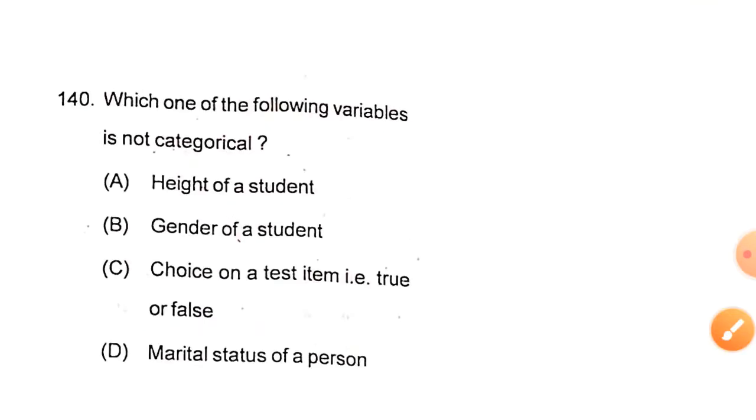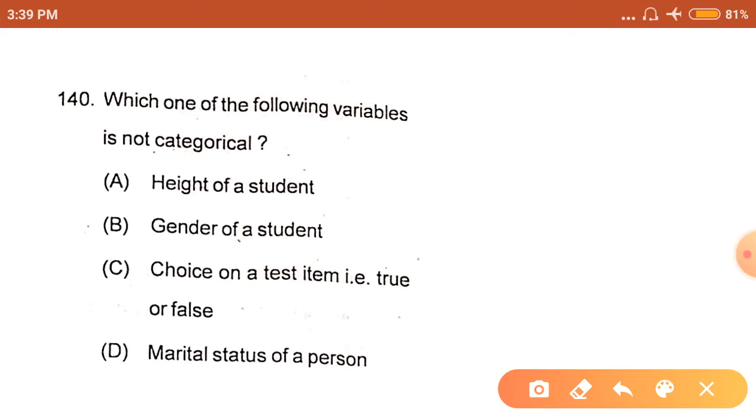Which one of the following variables is not categorical? Let us analyze. The marital status of a person, either married or unmarried, is categorical. Choice of test item true or false is also categorical. Gender of a student is also categorical, either male or female. So the only option which is left is height of a student. The answer is option A. Height of a student is not a categorical variable.